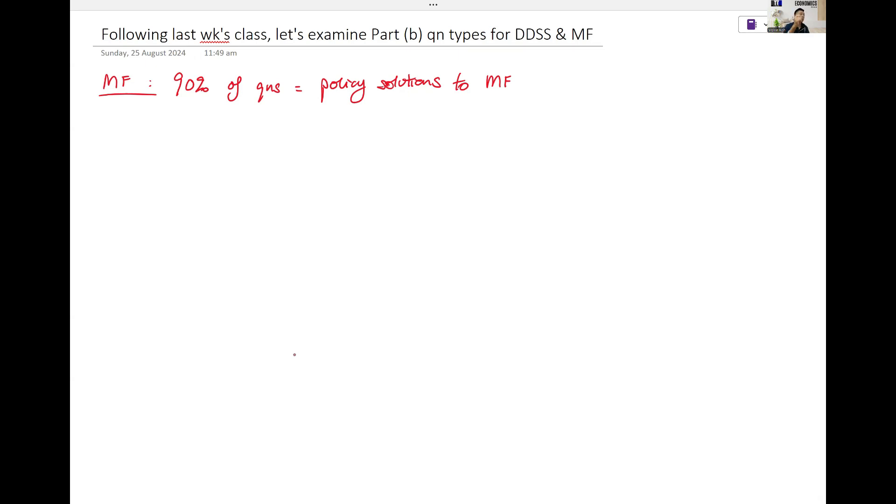So if you look at policy solutions to market failure, I should first tell you about Part B. How many marks? Part B is 15 marks, which has to be 10 marks plus 5 marks.